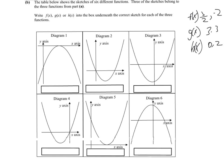So part b tells us that the table below shows the sketches of six different functions. Three of these sketches belong to three functions from part a. So write f(x), g(x) or h(x) into the box underneath the correct sketch for each of the three functions. So we're trying to match up the functions that we were dealing with in the last question with these graphs here.